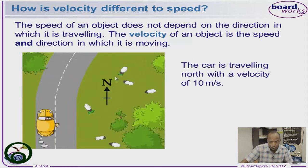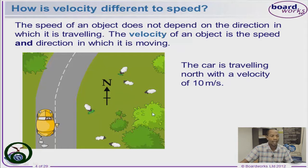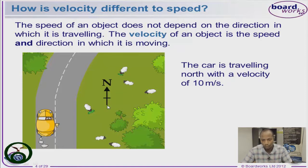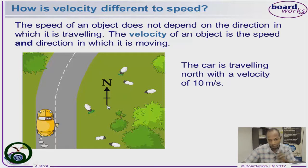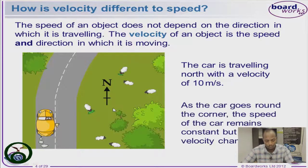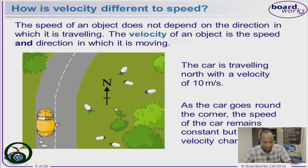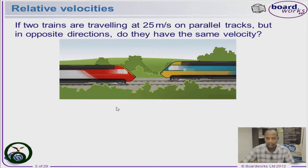For velocity, we look at whether the object is going towards the north, south, east, west, right, left, upward, or downward. We also consider whether the object is moving in a circular form, because we are discussing the direction of motion. Therefore, velocity makes use of direction while speed does not — speed only deals with the distance moved in a specified time.